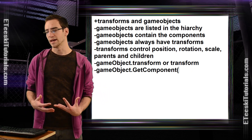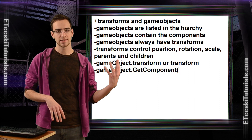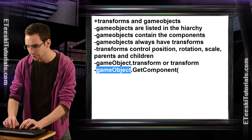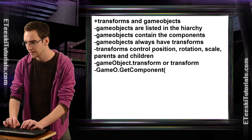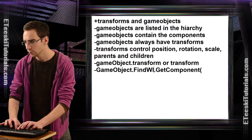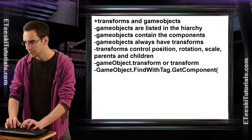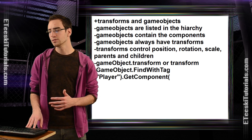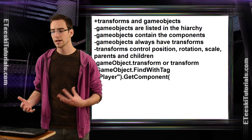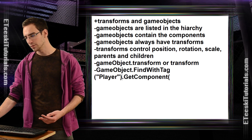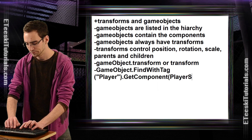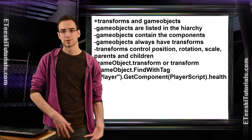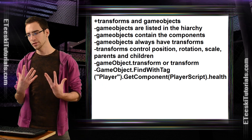Let's say you're trying to access a script from a game object. You would write gameObject.FindWithTag("Player") — this is assuming that you put the tag Player on your player. When you write gameObject.FindWithTag, it's going to return the first game object that Unity finds with the tag of Player, and from that we can GetComponent of PlayerScript, and then from that we can access something like health. That way, from another game object, we can affect the health of a player through that game object.